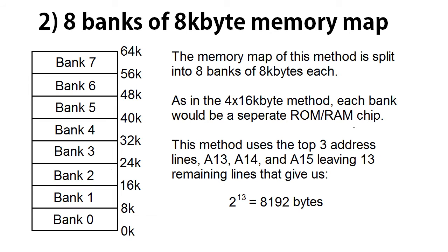Our second method is the 8 banks of 8 kilobyte memory map. As it says, we split into 8 banks of 8 kilobytes each. Each one would be its own separate RAM, ROM, or chip — mix and match as you like. This would use the top three address lines rather than two, which leaves you with 13 lines for the actual addressing — which is why you only get 8 kilobytes rather than 16 kilobytes.